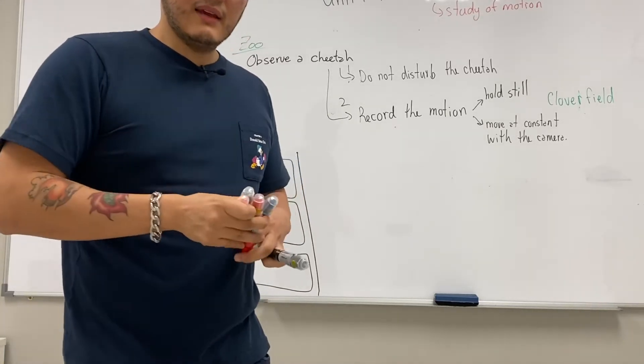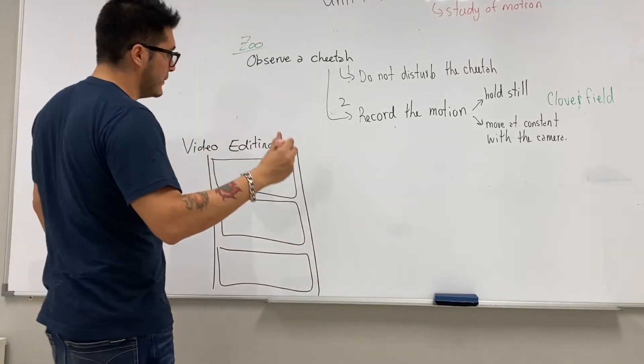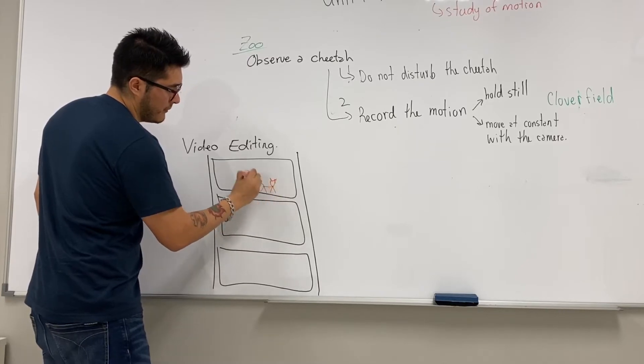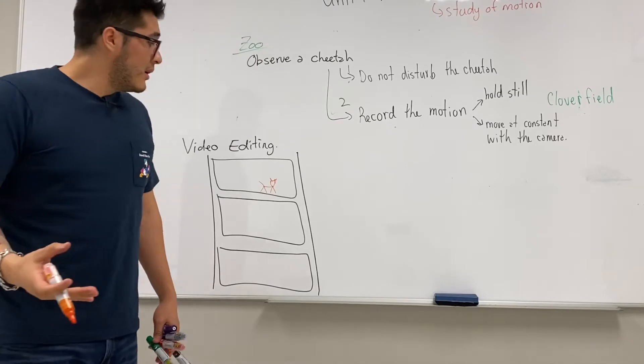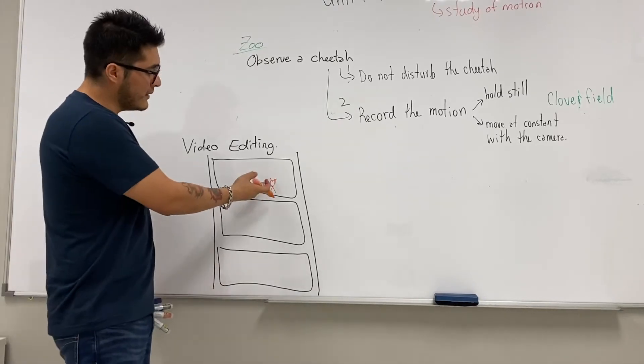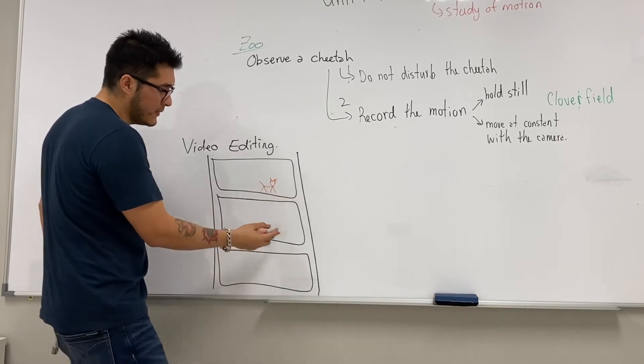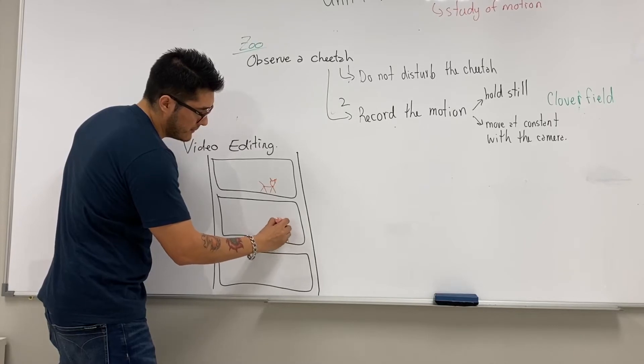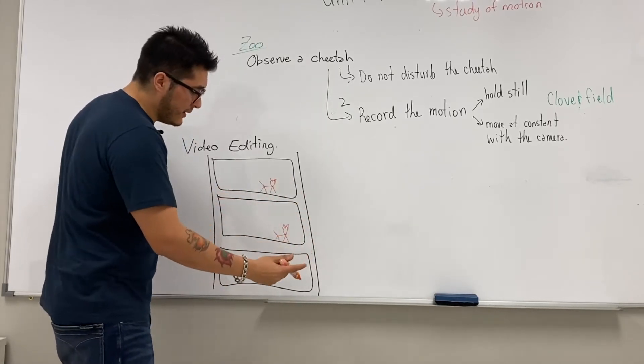So again, if these are still images, in each image you're going to see the cheetah only once. Okay, so this cheetah happens to be moving along. Right now we don't know what's going on. We need to refer to the second frame or the second still picture. Maybe the cheetah moves a little bit more to the right, and then the cheetah moves a little bit more to the right again.